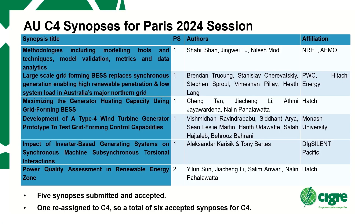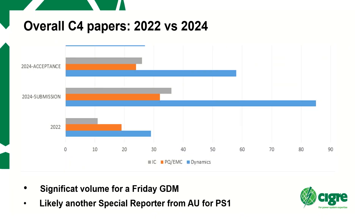For next year, Angela mentioned 29 accepted papers — six of which are coming from C4. We originally had five, but one was agreed between the A1 and C4 conveners to be placed in C4. So we are returning to the numbers we had in 2018 — six — which had dropped due to COVID. It is great to see we are back. PS1, power system dynamic performance, is clearly where most of the Australian focus is coming from.